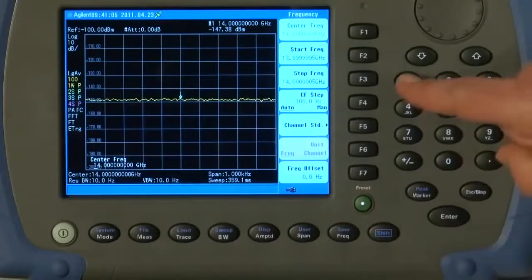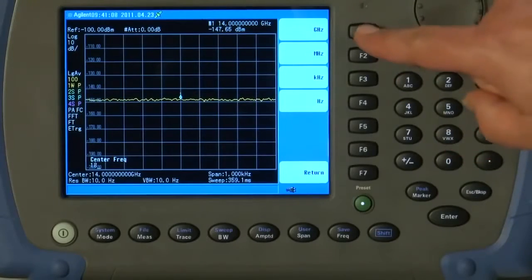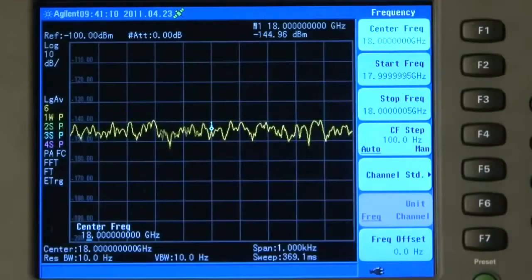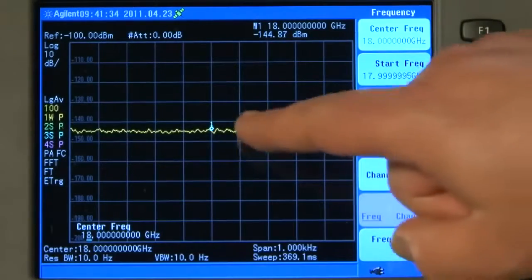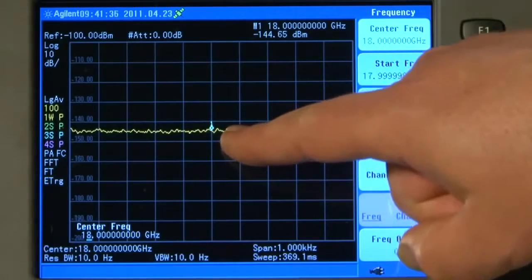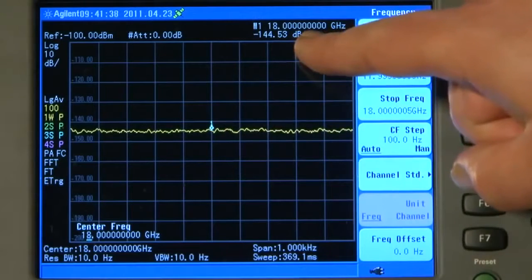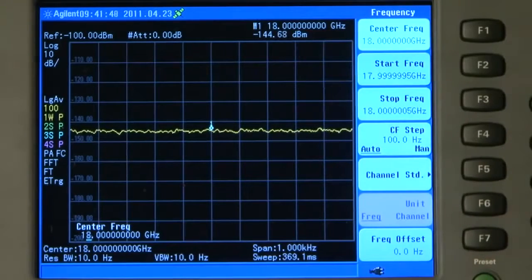Let us just change the frequency to 18 GHz and see what we get there. And once the averaging has settled, you can see here at a frequency of 18 GHz, we are still getting a sensitivity of around minus 144, minus 145 dBm. Quite incredible for a handheld spectrum analyzer.